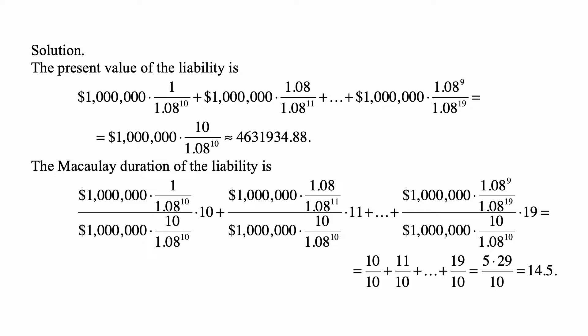Well, we can see that 1.08, when it's in the numerator and the denominator cancels out, and every single one of those payments, those present values, ends up being equal to the first one, which is $1 million divided by 1.08 to the tenth, and we have the numerators equal to 1.08 to the zero, 1.08 to the first, and so on, through 1.08 to the ninth.